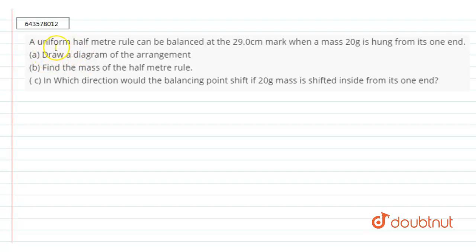Hello, so our question is a uniform half meter rule can be balanced at 29 cm mark when a mass of 20 grams is hung from its one end. So in first part we have to draw a diagram of the arrangement.